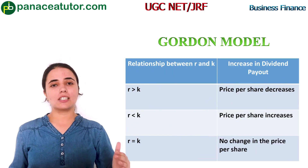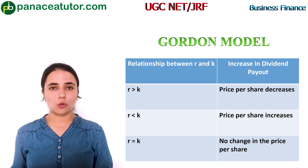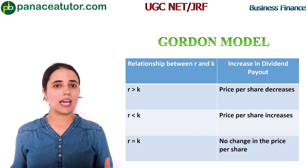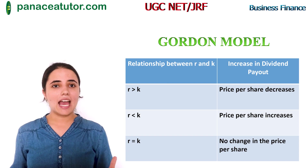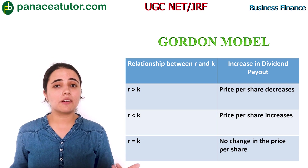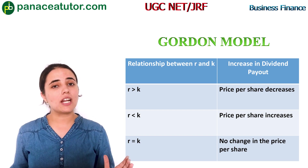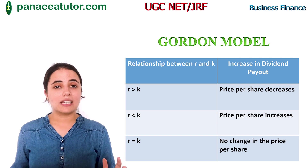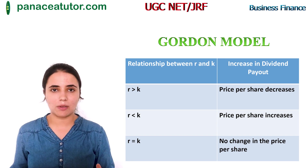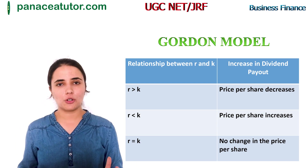Moving towards the classification of firms done by Gordon. Gordon has also classified firms into three types: normal firms, growth firms, and declining firms. In case of normal firms, R equals K; in declining firms, R is less than K; and in growth firms, R is greater than K. It is advisable for declining firms that their dividend payout ratio should be 100% to increase market price of shares. For growth firms, dividend payout ratio should be 0% to increase firm value and market price. In case of normal firms, every dividend payout ratio is optimum.